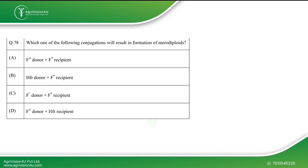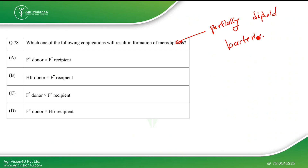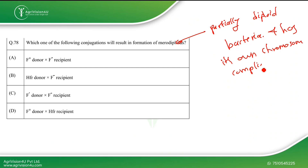Moving to the next question: which conjugation will result in the formation of a merodiploid? A merodiploid is a partially diploid bacterium — it has its own chromosome complement, and chromosome fragments are introduced by the process of conjugation, transformation, or transduction.